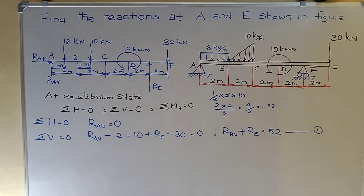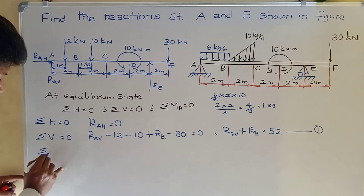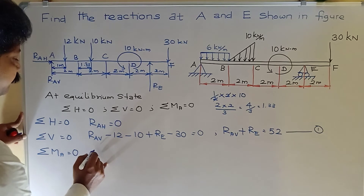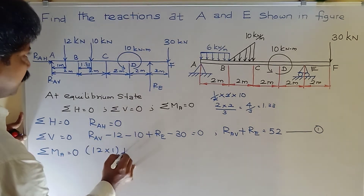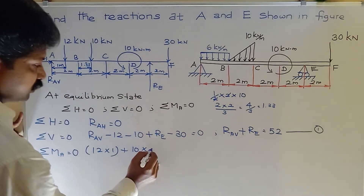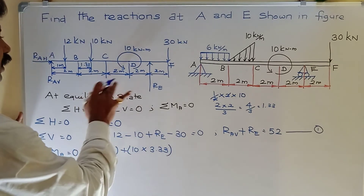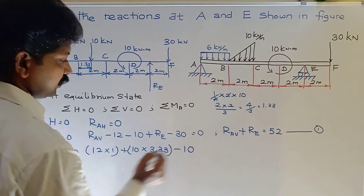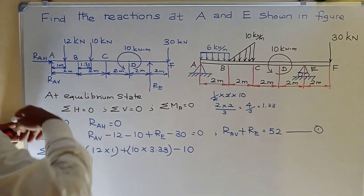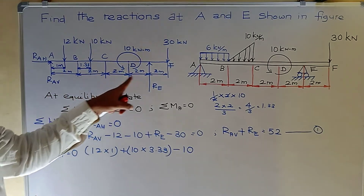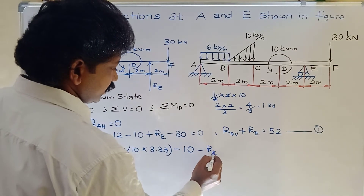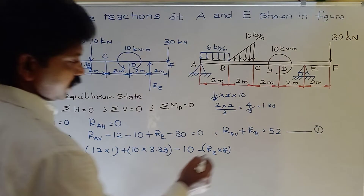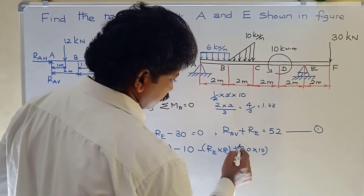Third condition, Sigma MA = 0: taking moments about point A — 12 kN times 1 m (clockwise, positive) plus 10 kN times 3.33 m (2 + 1.33) plus the couple of −10 kN·m (anticlockwise, negative) minus RE times 8 m plus 30 kN times 10 m = 0.